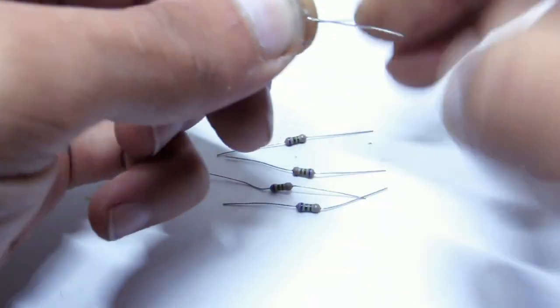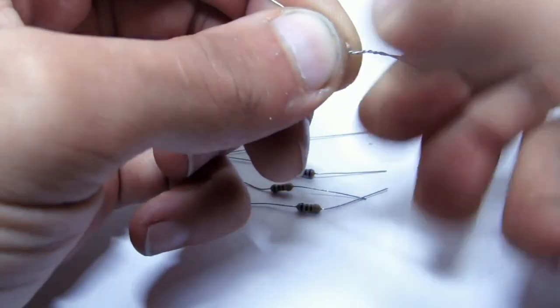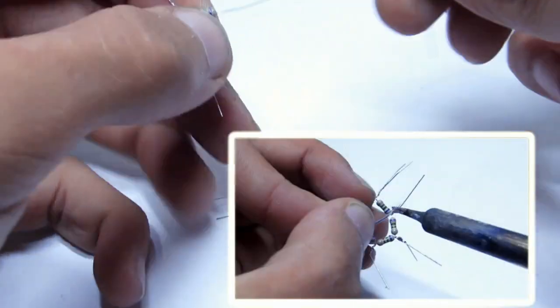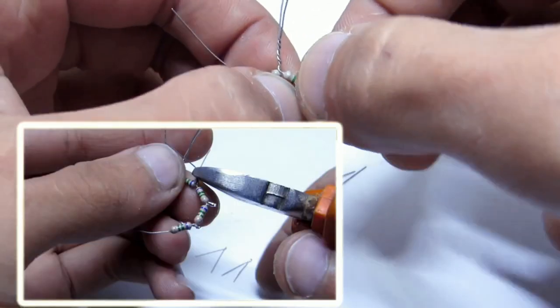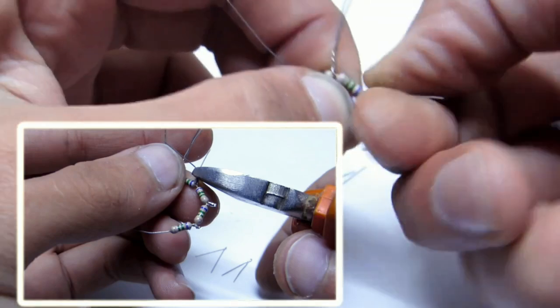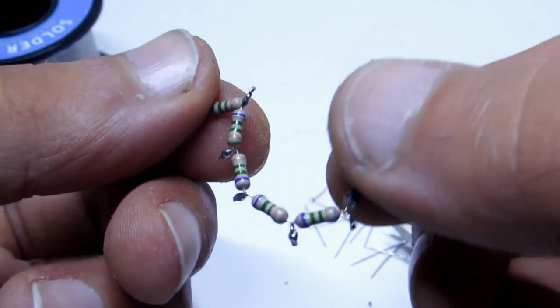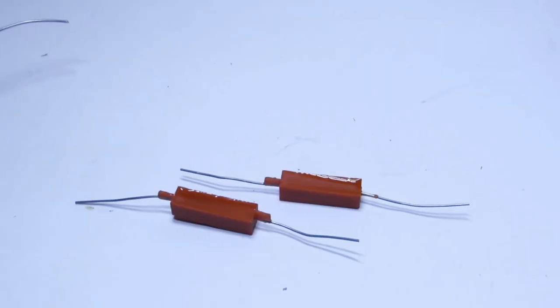Let's begin the assembly. First connect in series 6 discharge resistors, 8.2 mega Ohm. Next, we assemble a voltage multiplier.